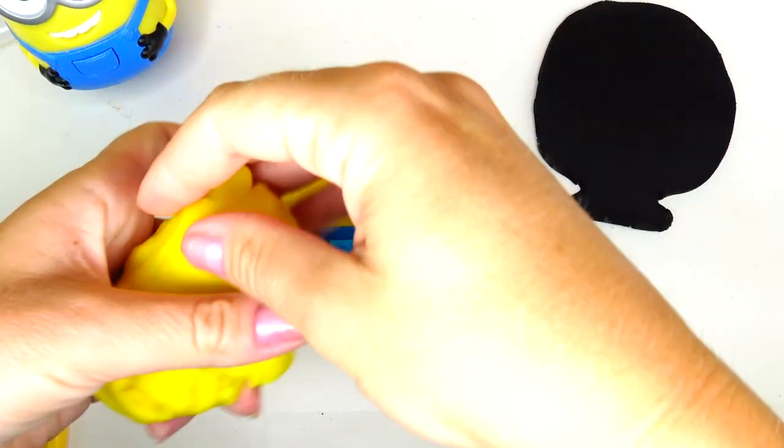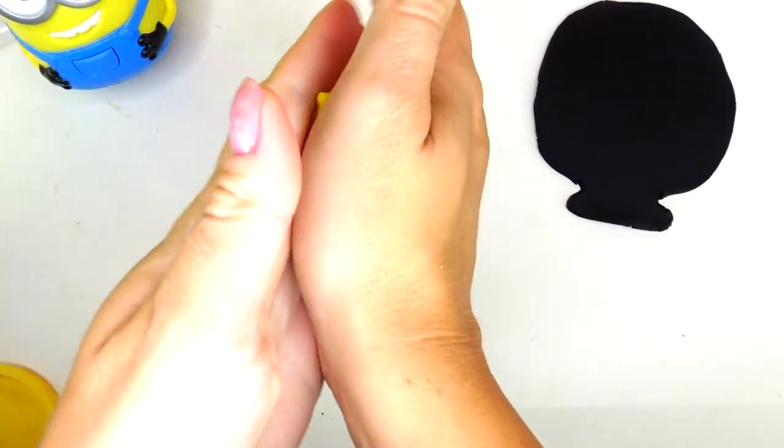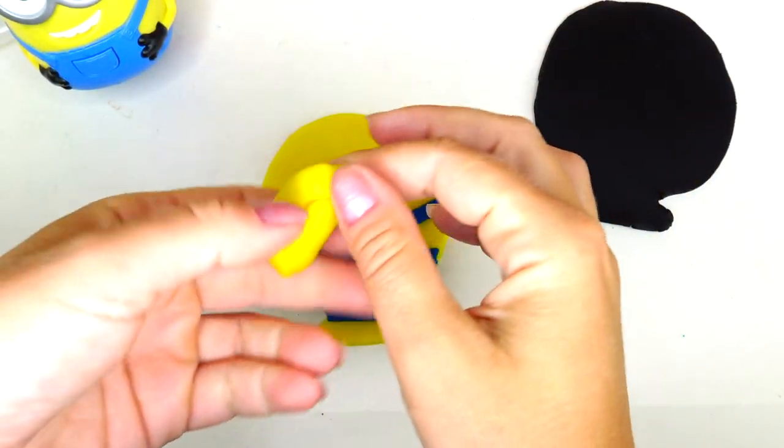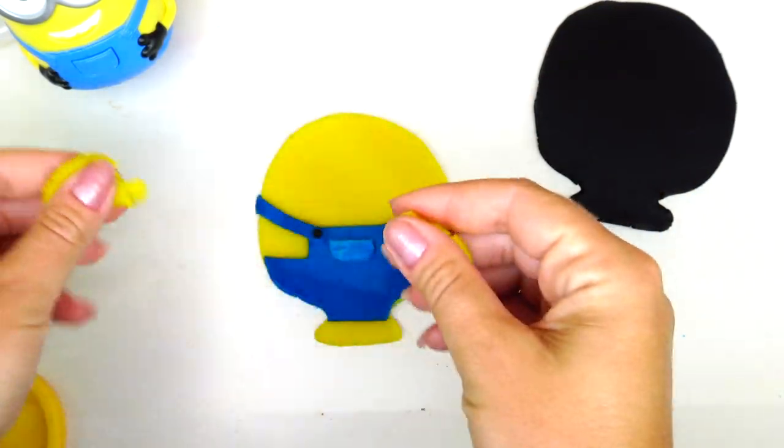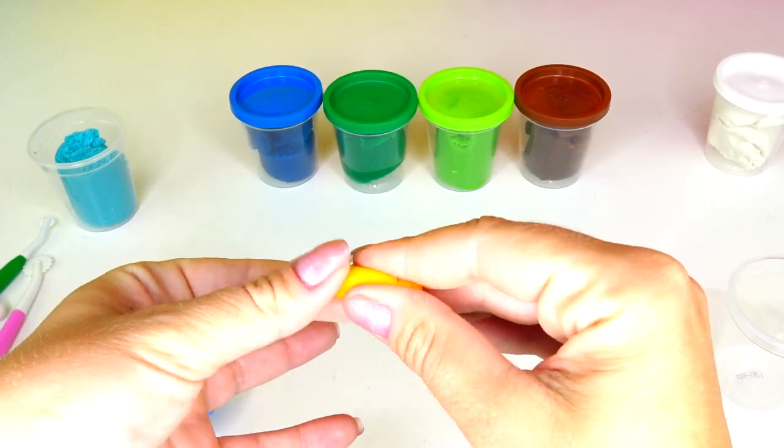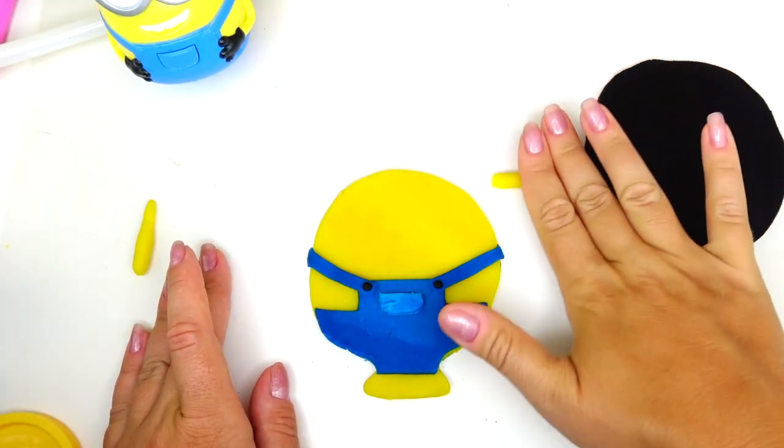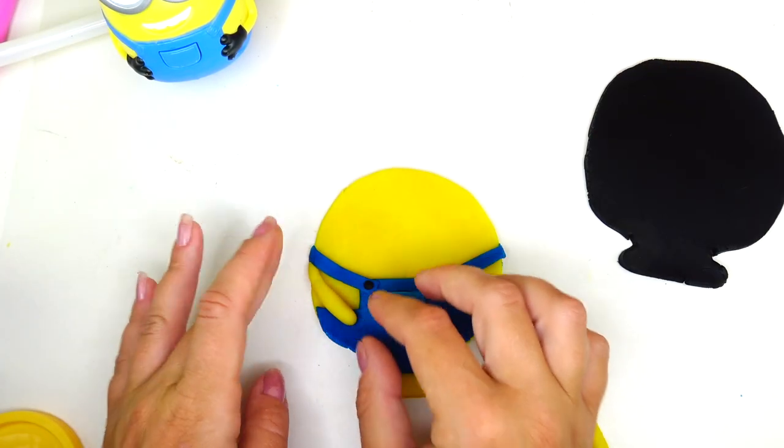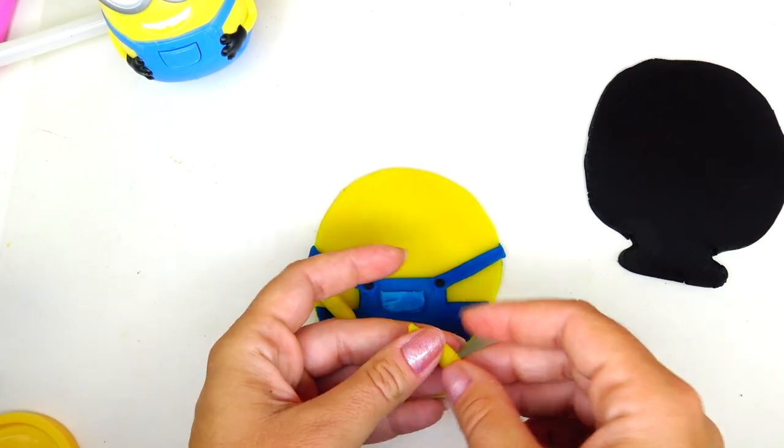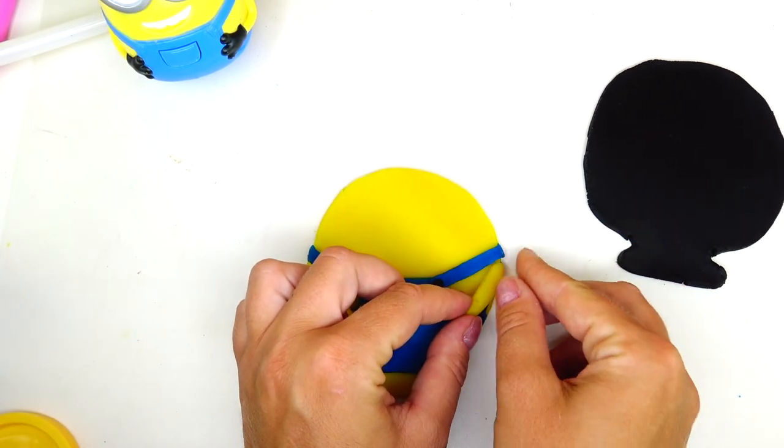Next thing I'm taking a little bit more yellow dough, and this time instead of rolling it flat, I'm actually going to make 3D arms for Bob. Adding a right arm and a left arm on the opposite side.